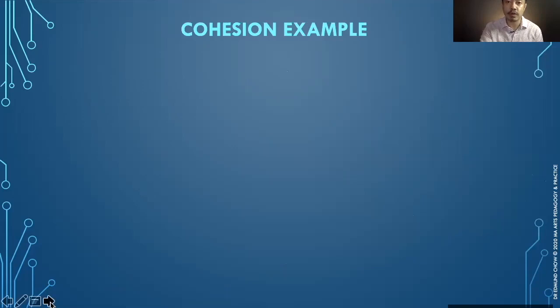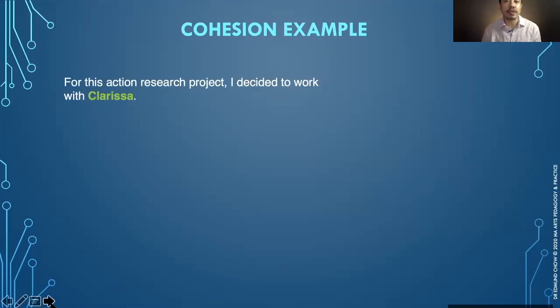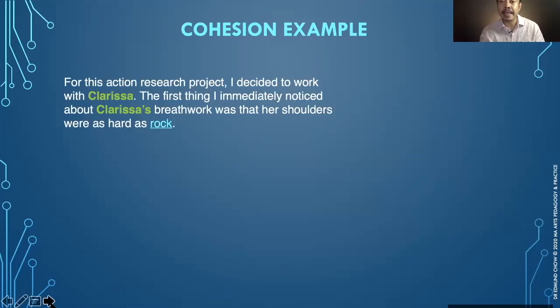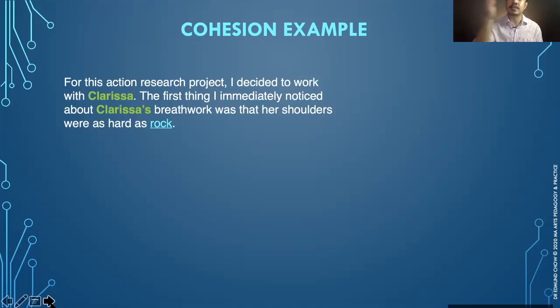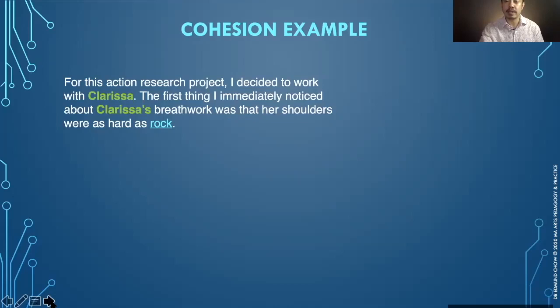Here's an example of cohesion — a fictional one to highlight the point. For this action research project I decided to work with Clarissa. The first thing I immediately noticed about Clarissa's breath work was that her shoulders were as hard as rock. So cohesion is taking a keyword from the previous sentence and repeating or reiterating it in a different way into the next sentence so that it flows. Clarissa is being repeated, then a new word comes and brings about the next sentence.